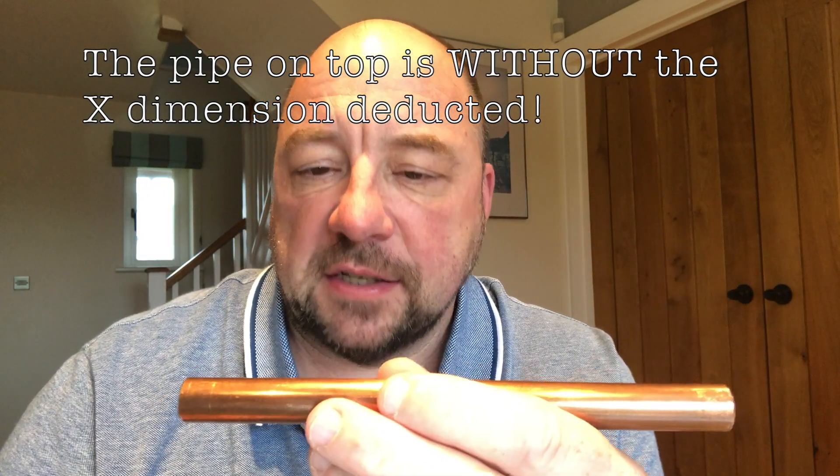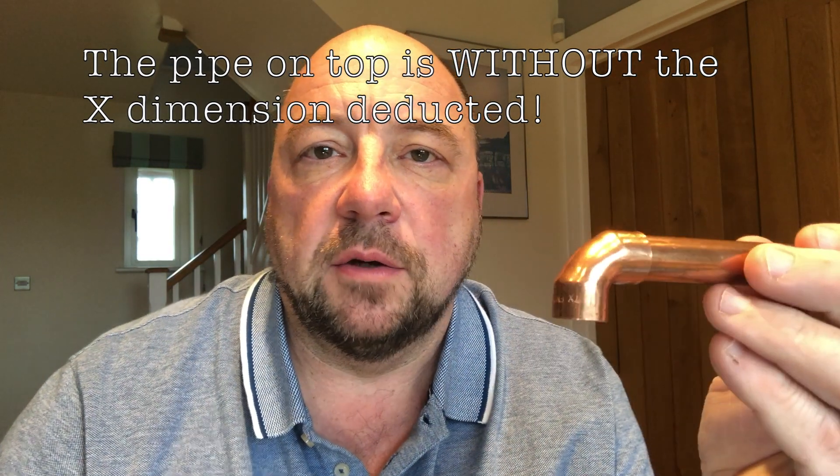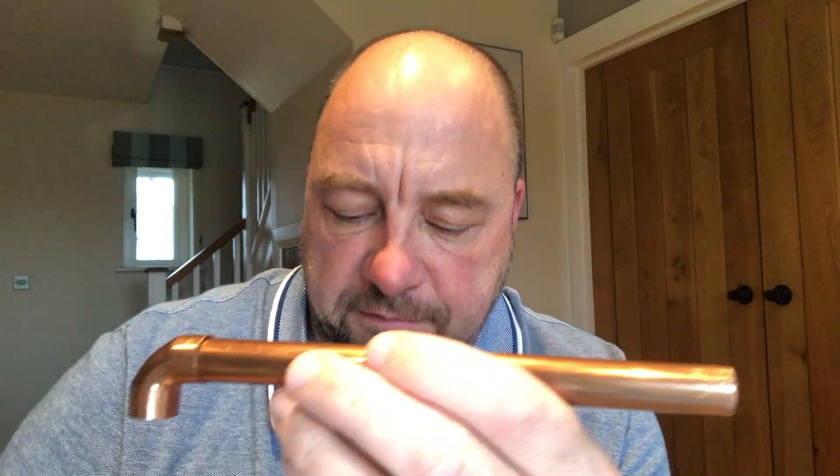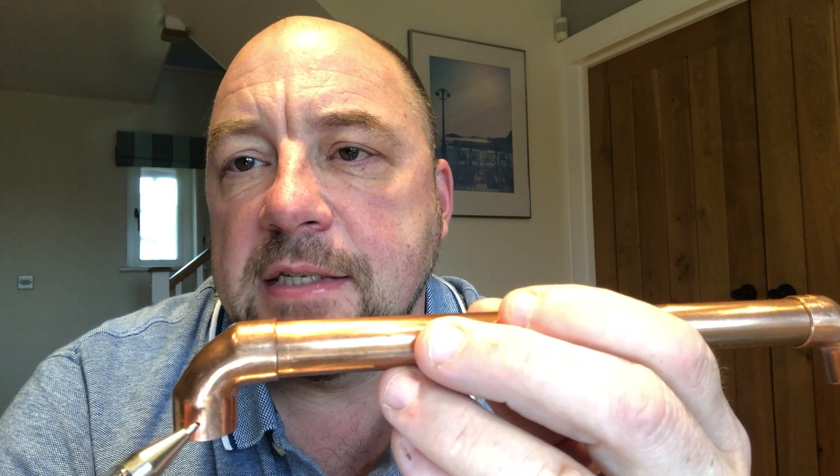What we're looking to do today is explain what an X factor or X dimension is. If I place an elbow over the end, you can see the pipe has engaged up to this point—that's already inside the fitting. What we're trying to do is calculate from center line here to center line here. If we've got a center to center measurement of 200 millimeters, the pipe finishes at this point, does not go all the way to the center line.